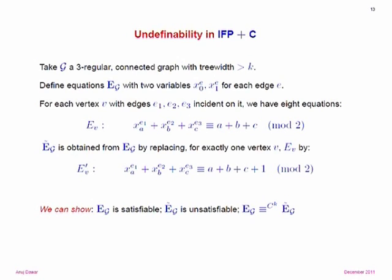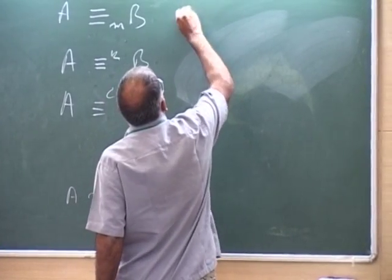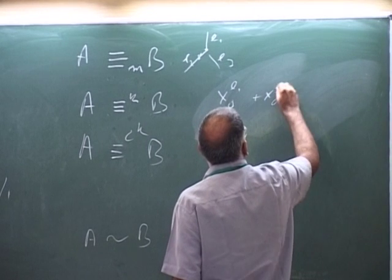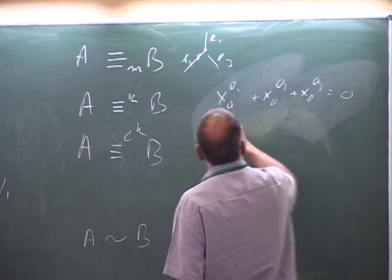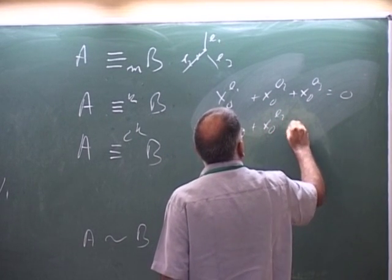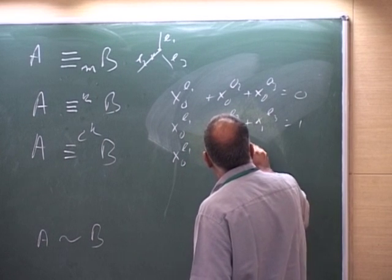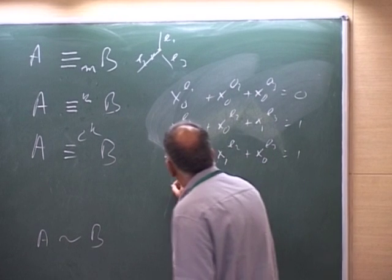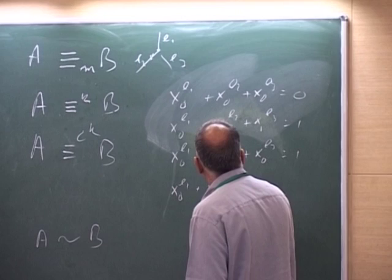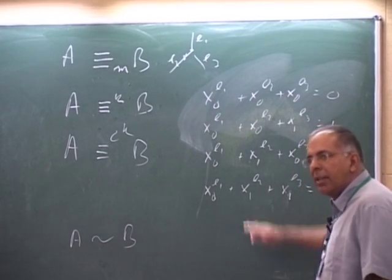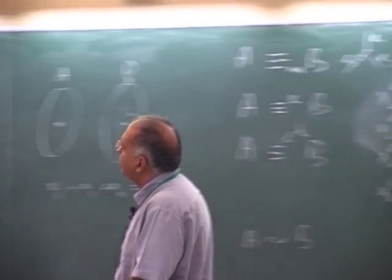What goes on the right-hand side? Basically, the sum of the subscripts mod 2. For a vertex V with incident edges E_1, E_2, E_3, the eight equations are: x_{0,E1}+x_{0,E2}+x_{0,E3}=0; x_{0,E1}+x_{0,E2}+x_{1,E3}=1; x_{0,E1}+x_{1,E2}+x_{0,E3}=1; x_{0,E1}+x_{1,E2}+x_{1,E3}=0; and the other four analogously. I call this system EG.